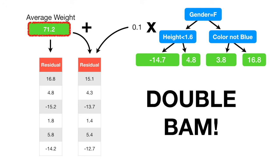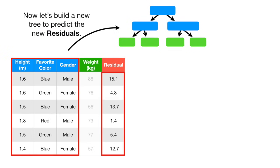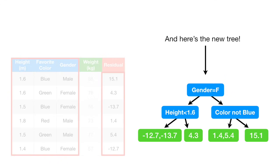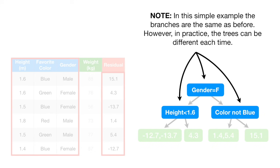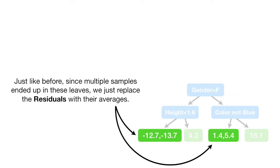Note: these are the original residuals from when our prediction was simply the average overall weight, and these are the residuals after adding the new tree scaled by the learning rate. The new residuals are all smaller than before, so we've taken a small step in the right direction. Now let's build a new tree to predict the new residuals. Note: in this simple example, the branches are the same as before. However, in practice, the trees can be different each time. Just like before, since multiple samples ended up in the same leaves, we replaced the residuals with their averages.